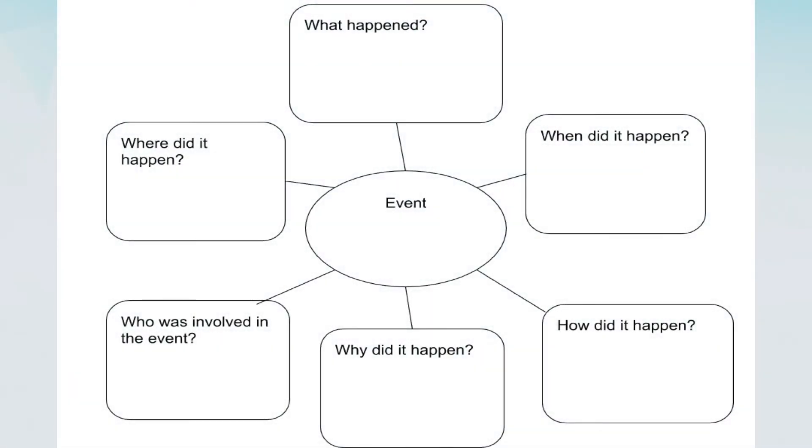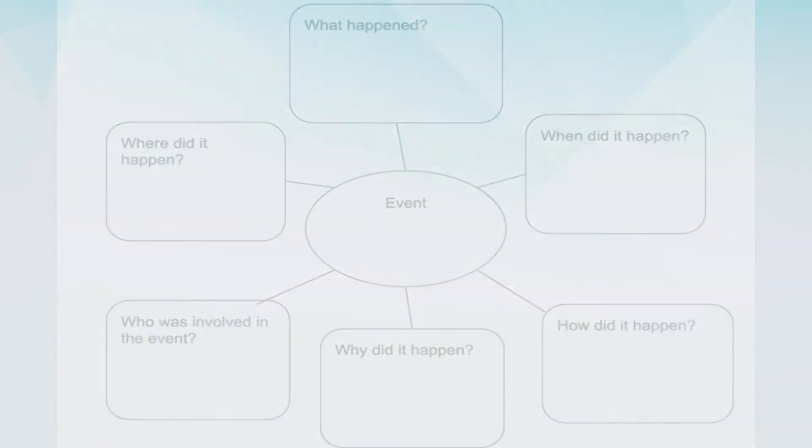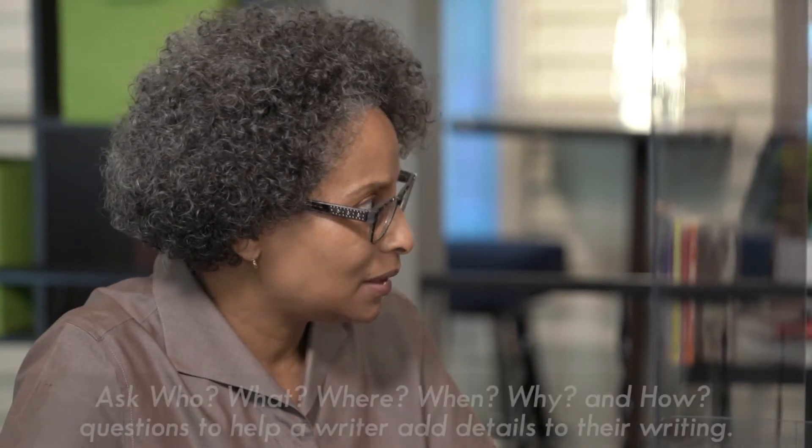You can tell that because event is in the center, and then all of the details come off of that center wheel, so to speak. So when you're doing a graphic organizer, especially one like this, to add more details to your writing, think about the five W's and the H.